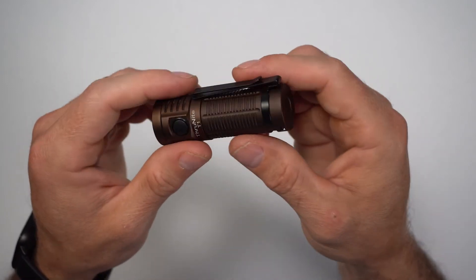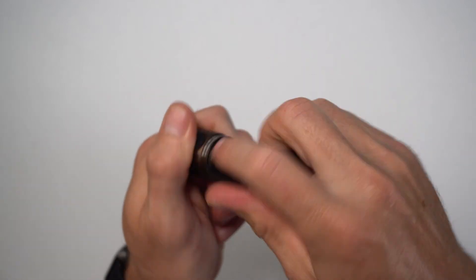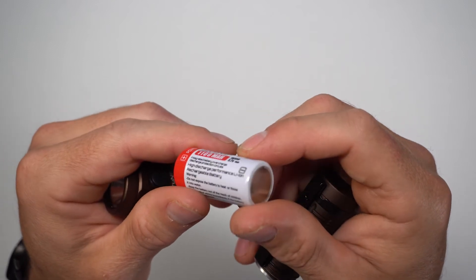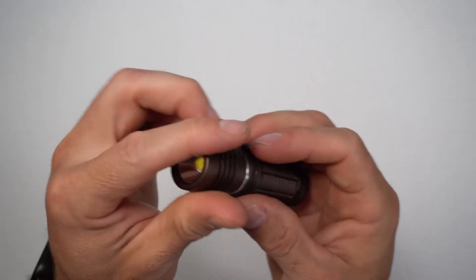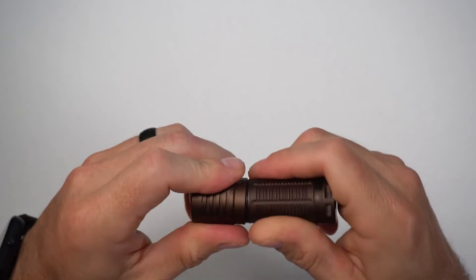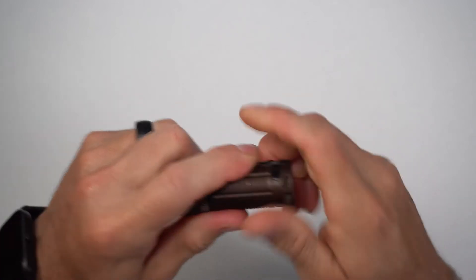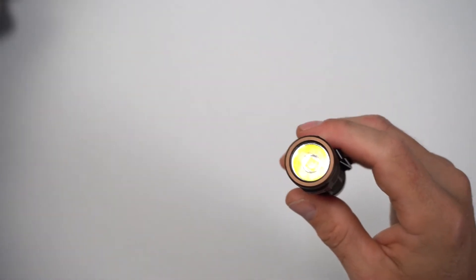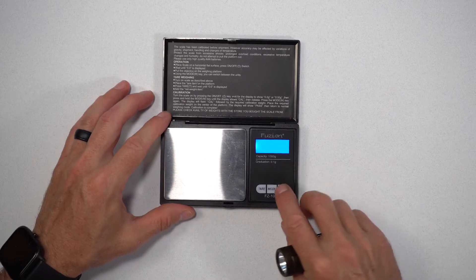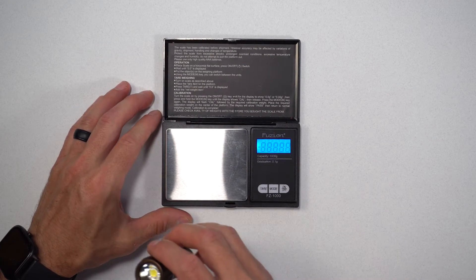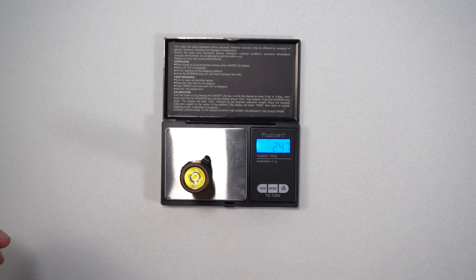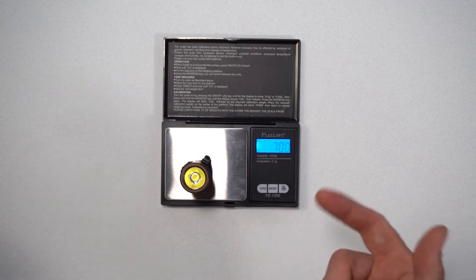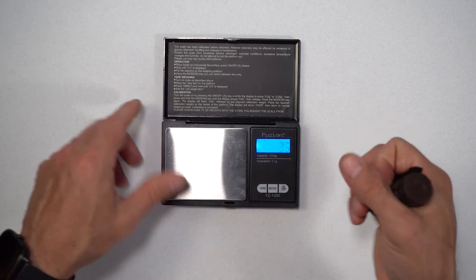It takes an 18350 battery, so I'll pop that out, which is supplied by Thrunite. It's 1100 milliamps, and again, it's lithium ion, so the voltage is 2.7 to 4.2 volts. It is aluminum, and then the weight is reported at 2.52 ounces, so we'll measure it here real quick. And it's 2.47 on my scale. It's 70 grams, and it's reported at 71.5 with the battery, so we're a little under.